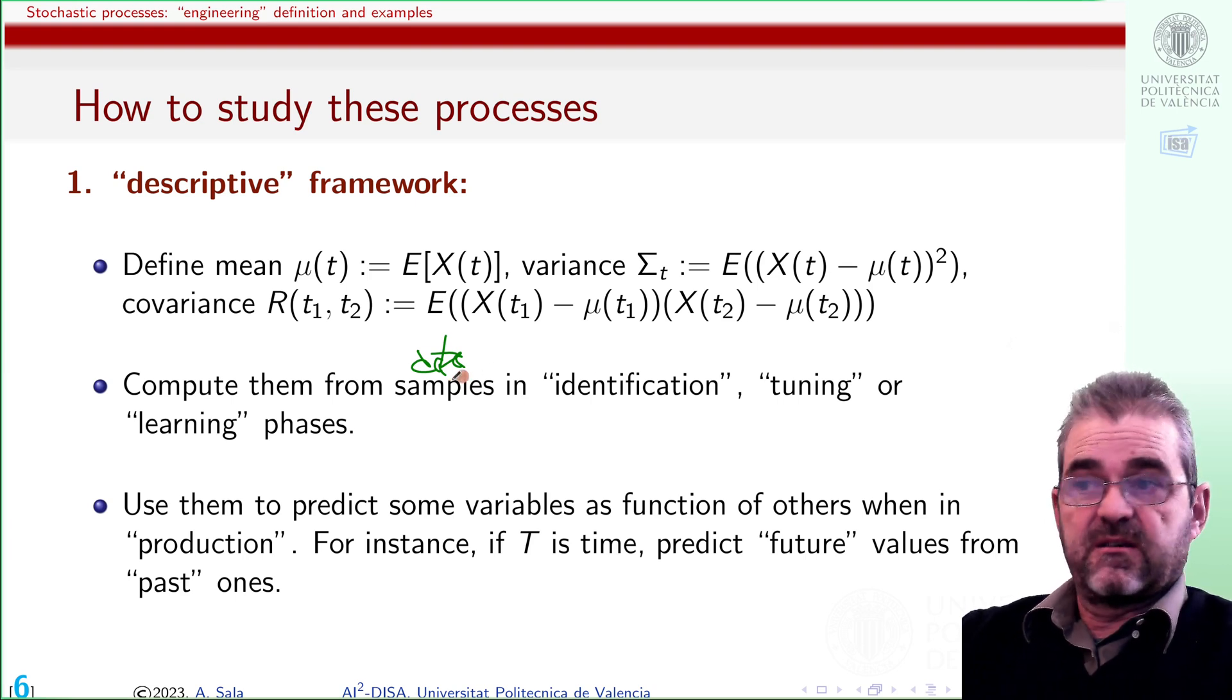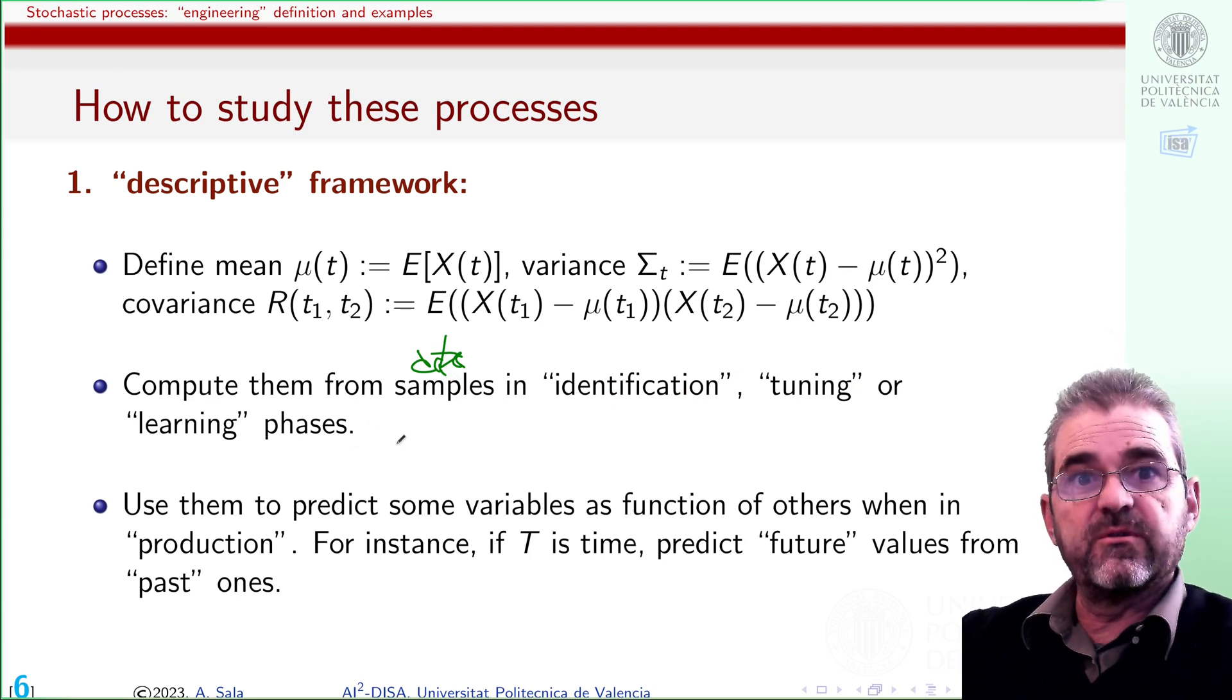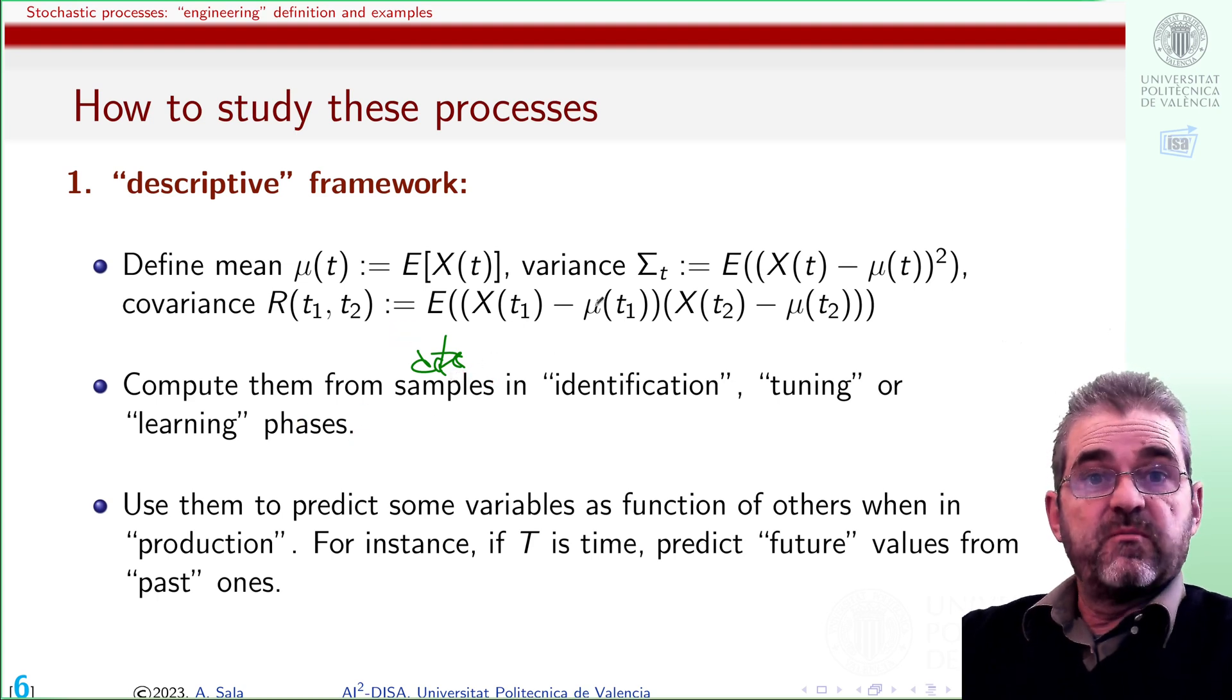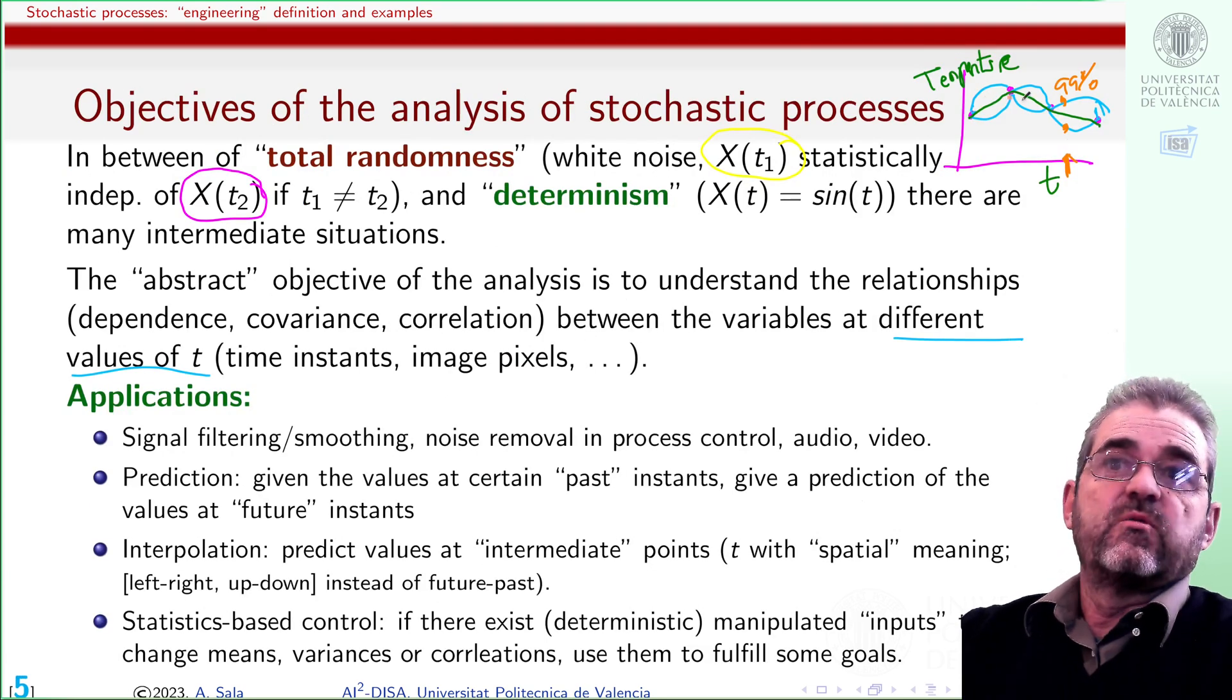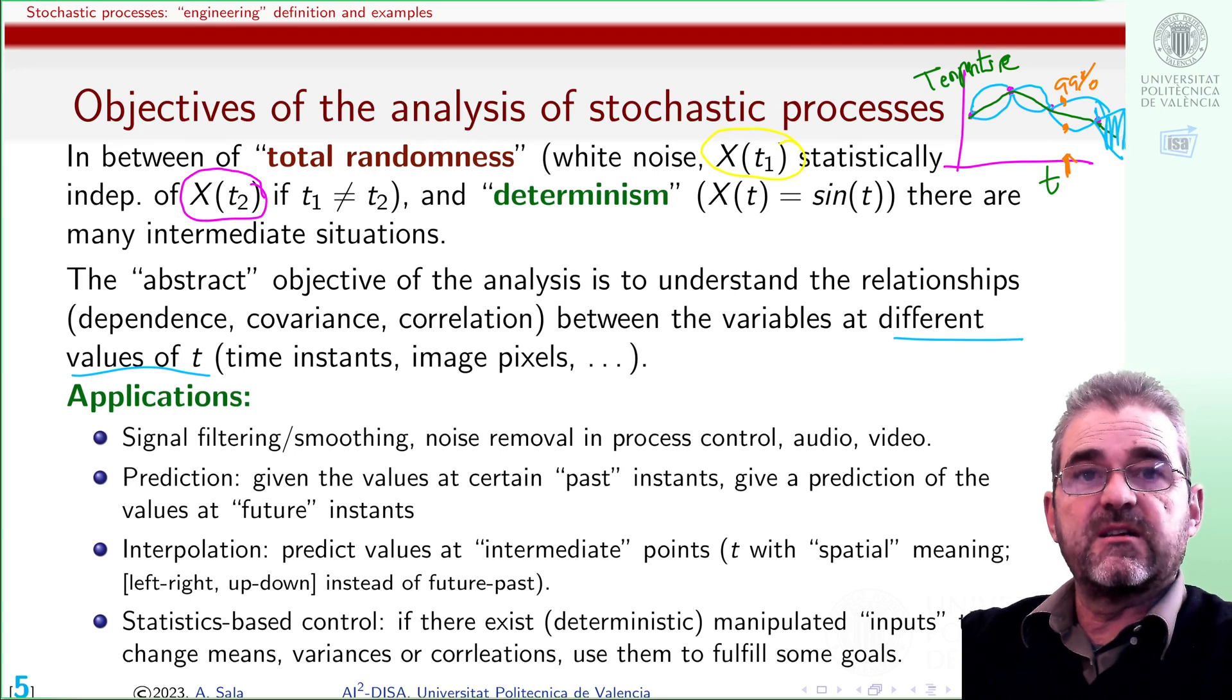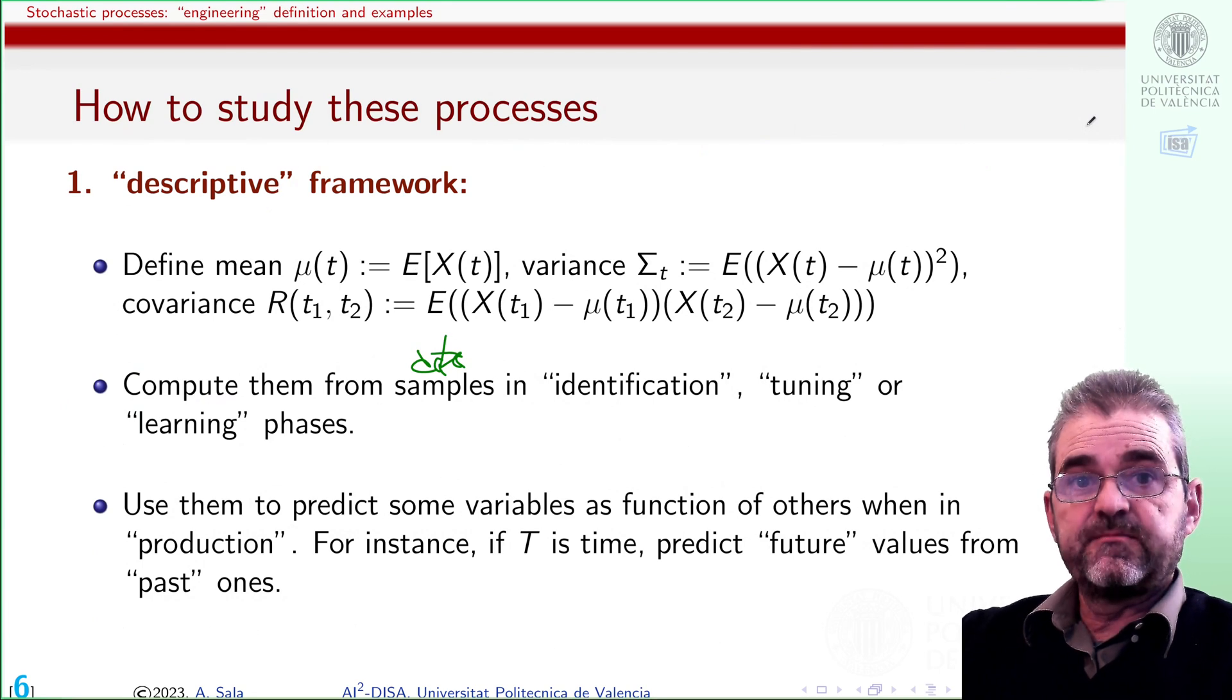And these phases are called identification, tuning, or learning, depending on what you're doing or which book you're reading. And once I have mean, variance, covariance, correlation and the like, I can use them to predict some variables. With these pink measurements, I can predict that my future temperatures may be in this range here. This is kind of a descriptive framework, computing correlations from data and using them to make predictions.